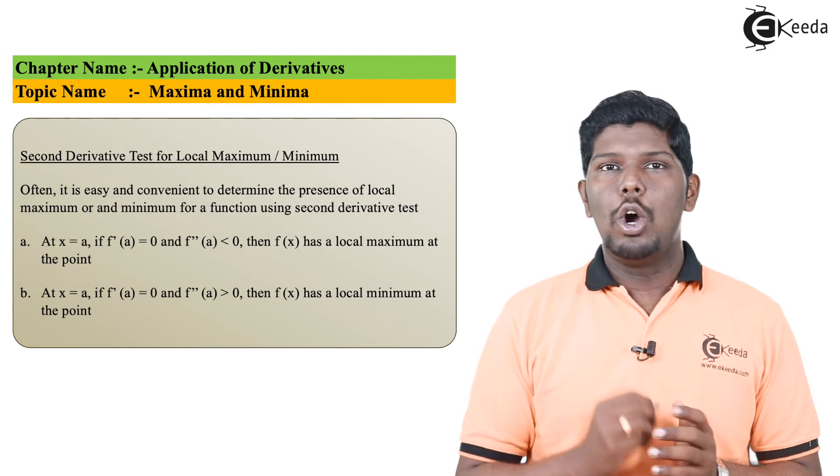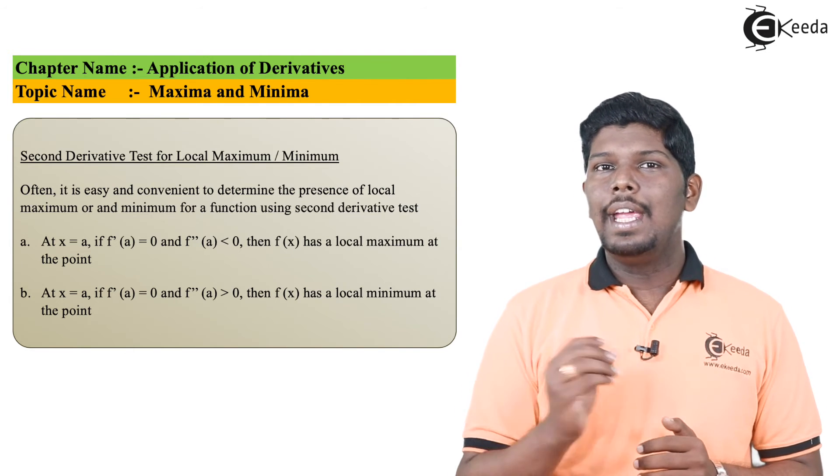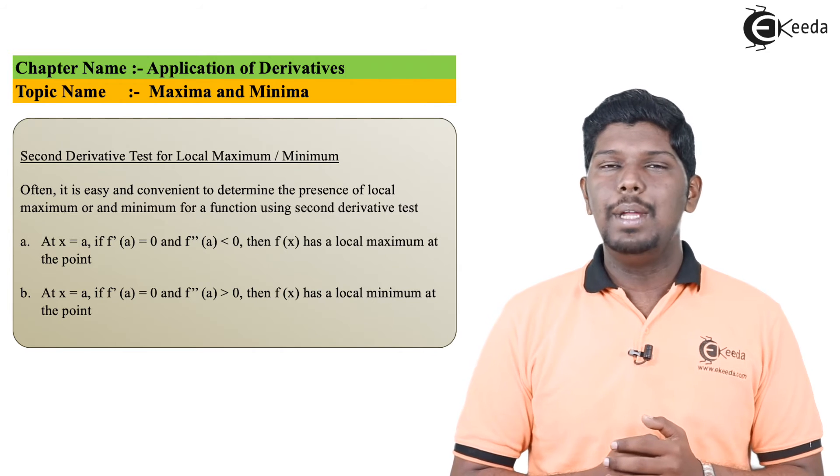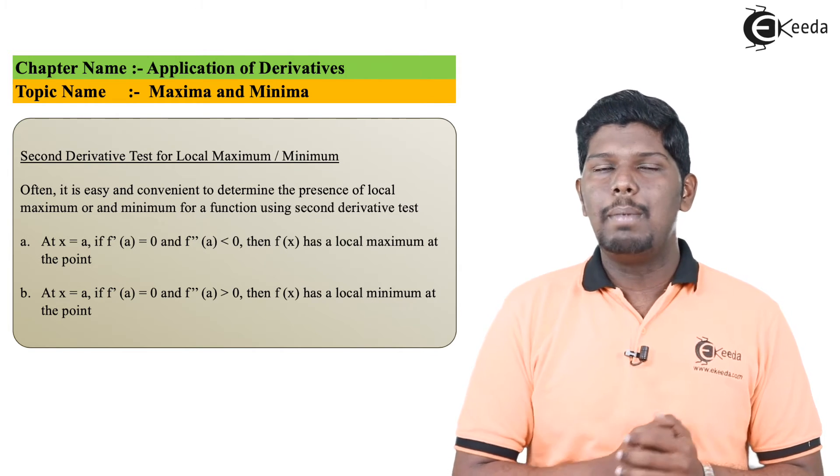Now from this value you need to observe. If you get a negative answer by substituting the value of x, it means your function is maximum at that point.